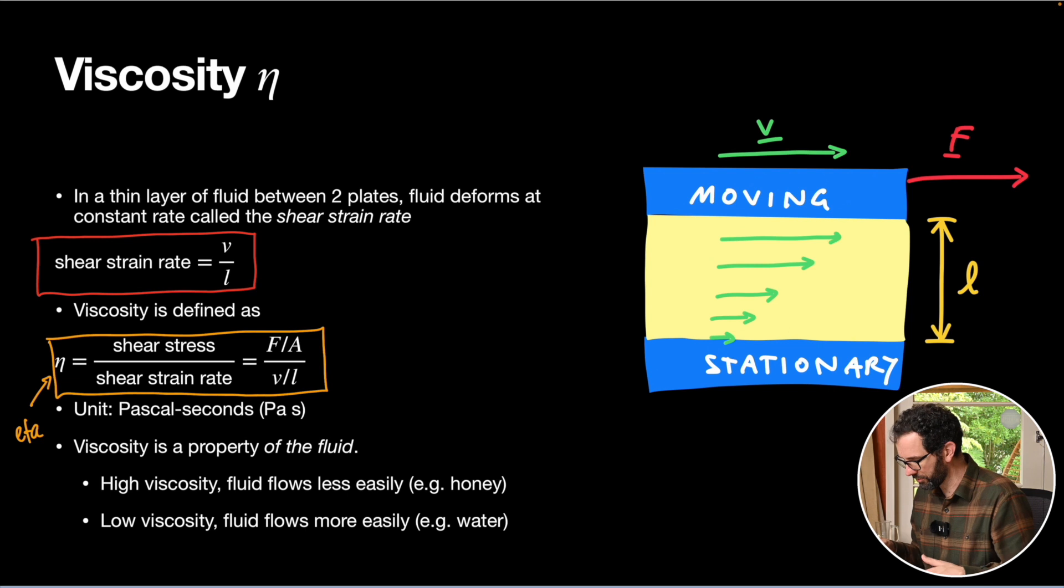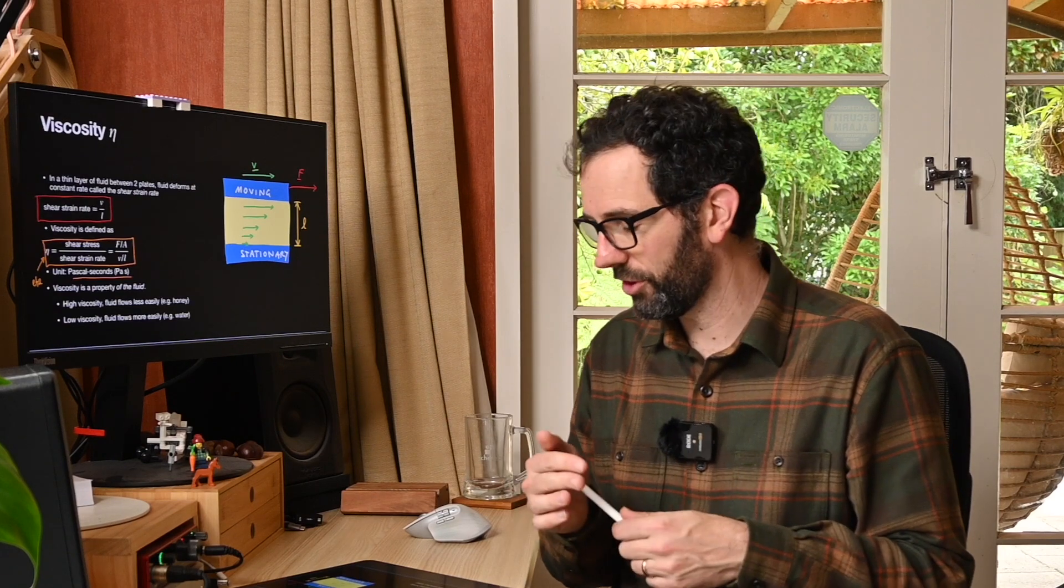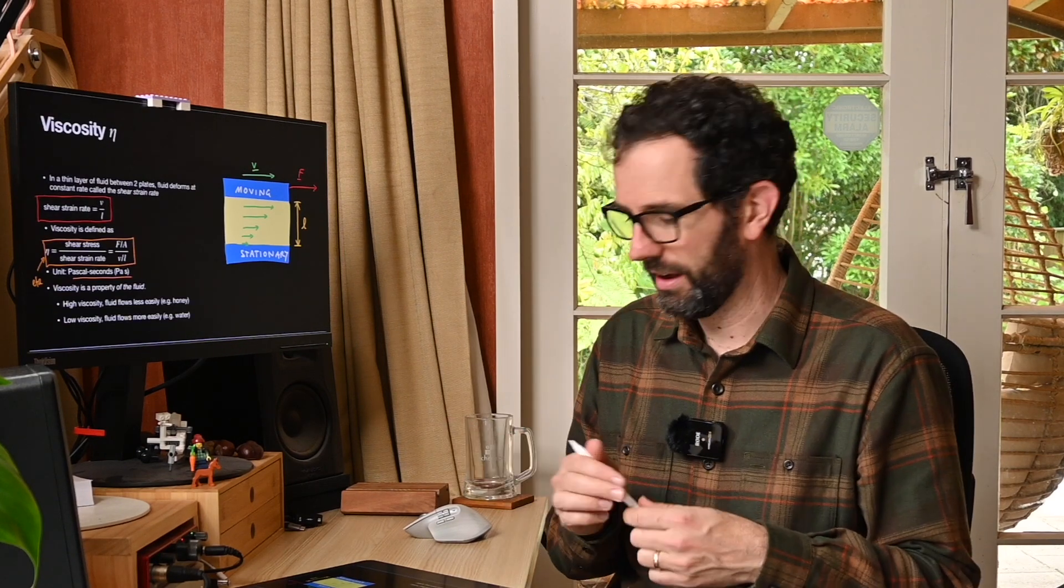If you do a little bit of messing around with the units, you find that the units of viscosity are Pascal seconds. Viscosity is a number that applies to the type of fluid. You might look up in a book what the viscosity is for a certain thing, and that will be a number.